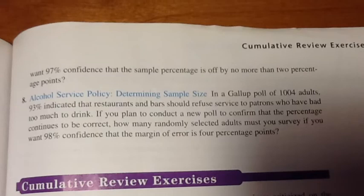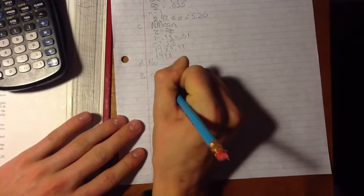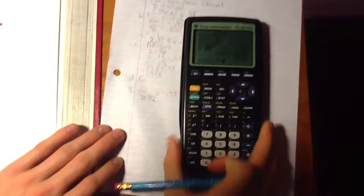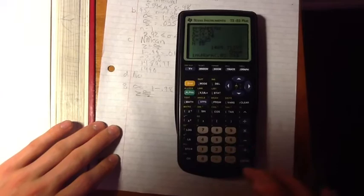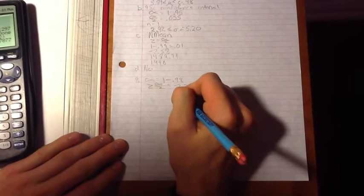We first want to start out by finding alpha, which is equal to 1 minus 0.98. We then want to find Z half alpha using our calculators. Press 2nd, Vars, go down to normal, inverse norm. Then we plug in 0.02 divided by 2. Press Enter. The answer that we get is equal to negative 2.326. We round that to negative 2.33.